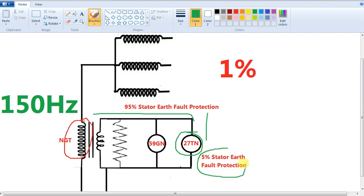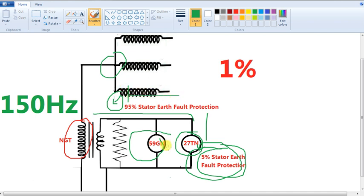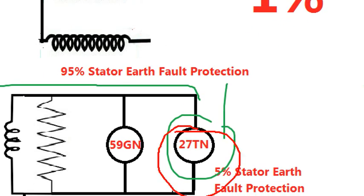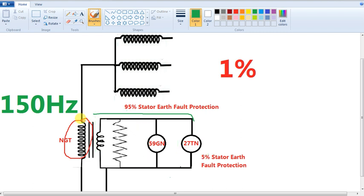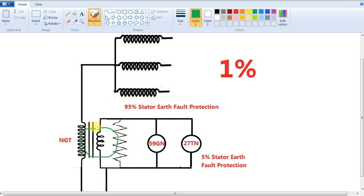This is the remaining 5% — what we need is the fault at the neutral point. This is the 5% generator protection; 95% of the system is covered outside. The current can reach the neutral. If you reach the source, you can develop a voltage in the NGT with a current at 150Hz. If you have the exact voltage, you can pick up this relay. In normal condition there will be a higher voltage; if you have any earth fault, the voltage drops and that relay will trip. This is the 5% stator earth fault protection.